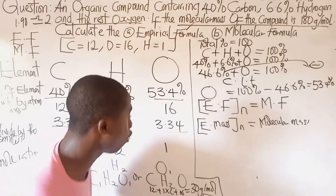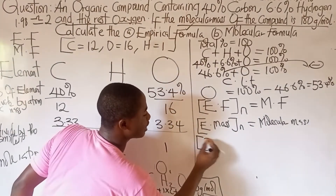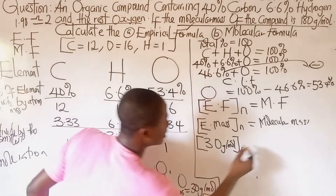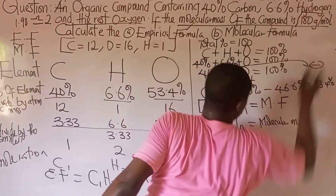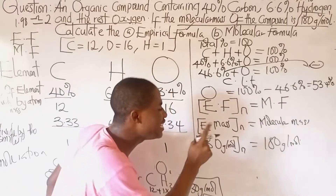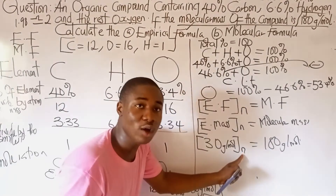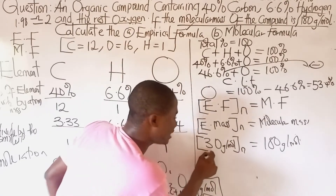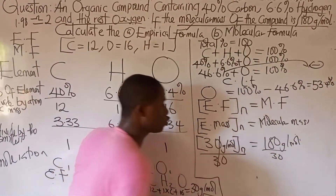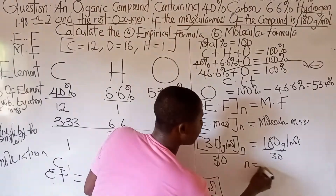Now we substitute into our formula: 30 × n = 180 grams per mole, where 180 is the molecular mass given in the question. Dividing both sides by the coefficient of n, which is 30: 180 ÷ 30 = 6. Therefore n = 6.